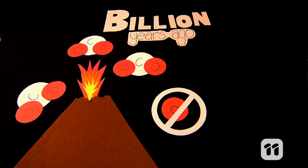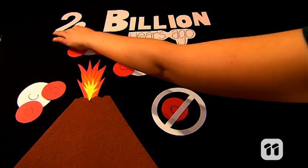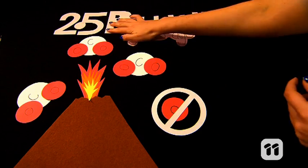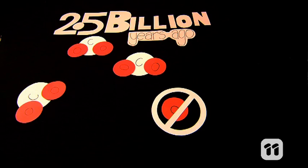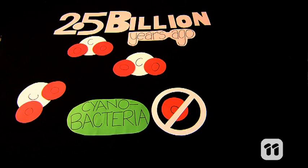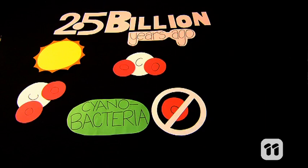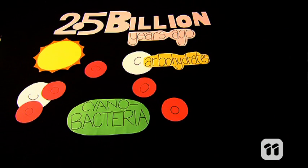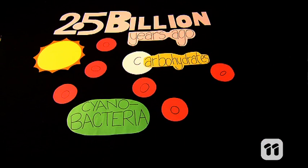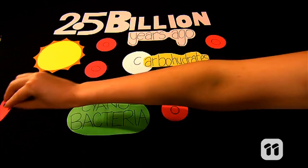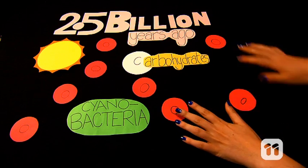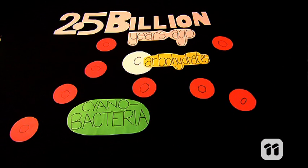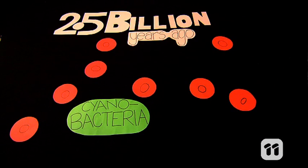Let's fast forward to around 2.5 billion years ago. Life has begun to evolve and cyanobacteria conduct photosynthesis for the first time, using sunshine to convert the CO2 in the air to carbohydrates and oxygen. With all this free oxygen, the atmosphere changes drastically.